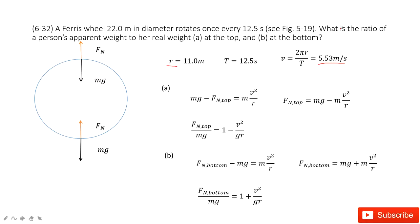And the next one, I ask you for the ratio of the apparent weight to the real weight. So what is apparent weight, what is the real weight? Apparent weight is the number shown on the scale. That is the normal force. The real weight is the mass times g.